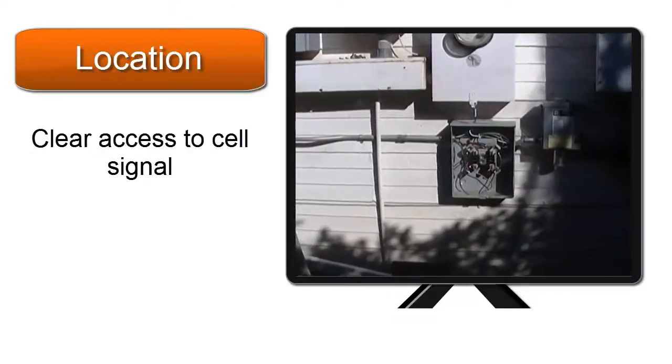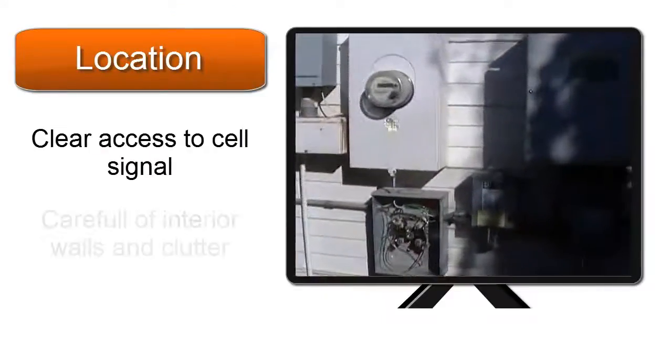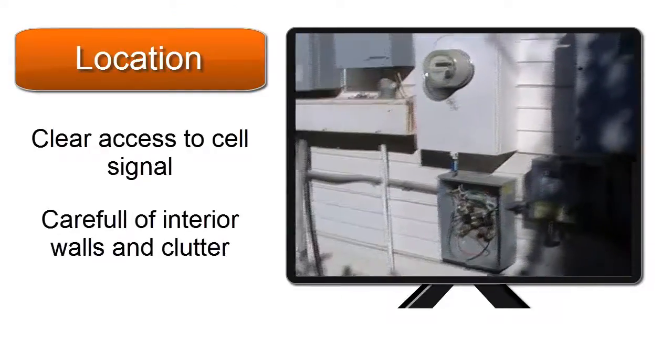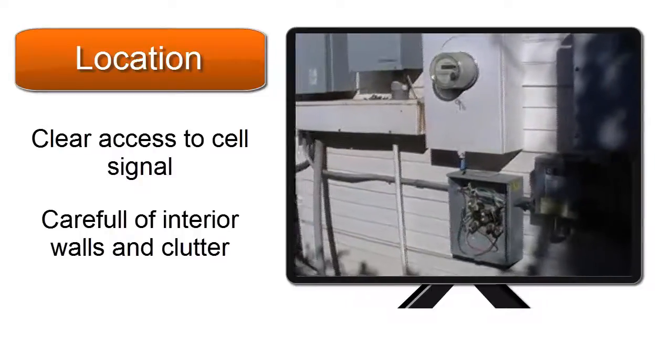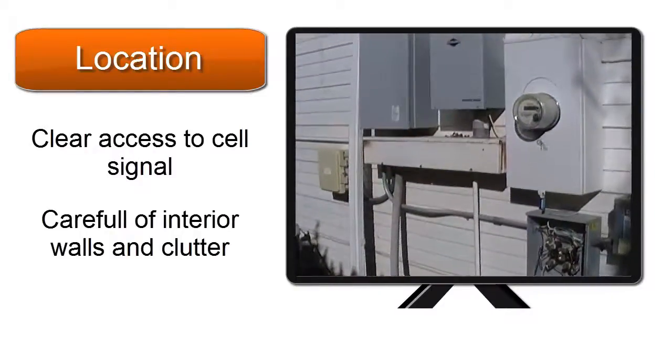Location. Make sure to give the meter clear access to the cell signal. Access can be blocked by interior walls and clutter. Install the meter in a location free of obstruction in order to guarantee cellular access to the internet.